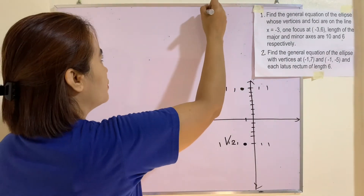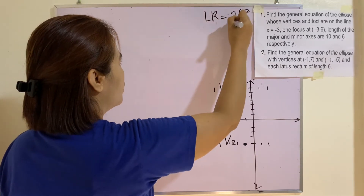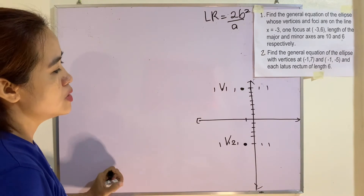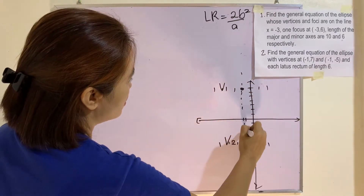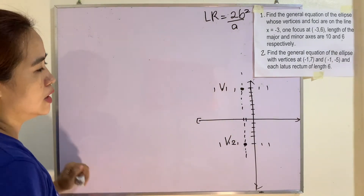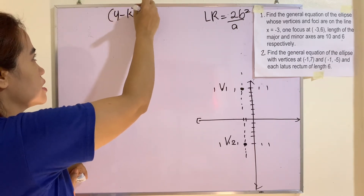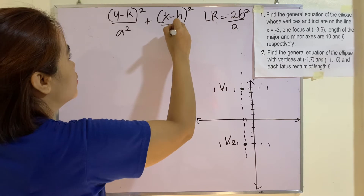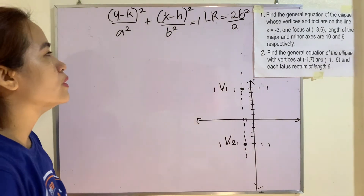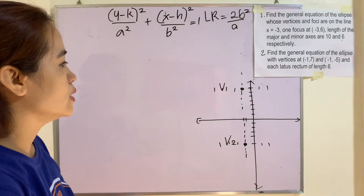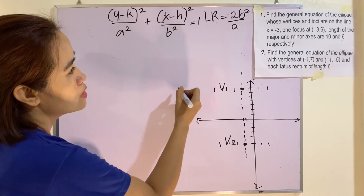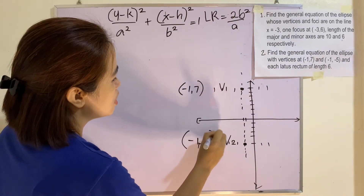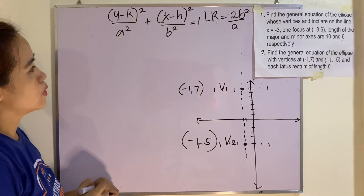We have the formula for latus rectum: 2b² / a. We need to find a, b, and the center. We can find the center because we have both vertices. Vertex 1 is (-1, 7) and vertex 2 is (-1, -5), so we use the midpoint formula.